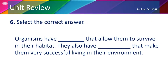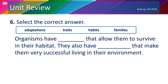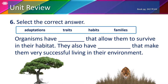In number 6, we are going to fill in the blanks with the correct words from the box. We have: Adaptations, Traits, Habits, and Families. Notice that there are only two blanks in the paragraph, which means we will only use two words from the box. 'Organisms have ___ that allow them to survive in their habitat.' Remember when we talked about jaguars and how their color affects how they hunt to survive — a tan jaguar can easily hide in the grassland, while a black jaguar hides in the shadowy trees because of its dark color. The color of the fur is a trait. These animals also have adaptations that make them very successful in their environment.